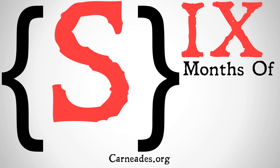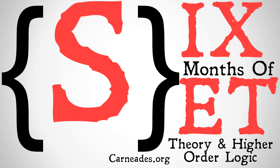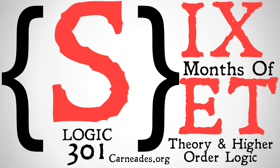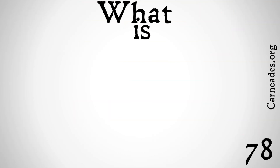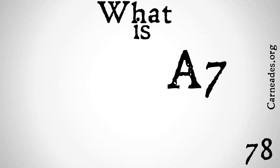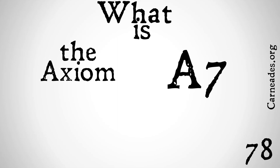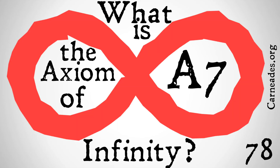Welcome back to Carneades.org. Today we're going to be continuing with our series, six months of set theory and higher order logic. This is Logic 301, month number three on Peano Arithmetic. Today we're going to be looking at what is A7, the axiom of infinity.